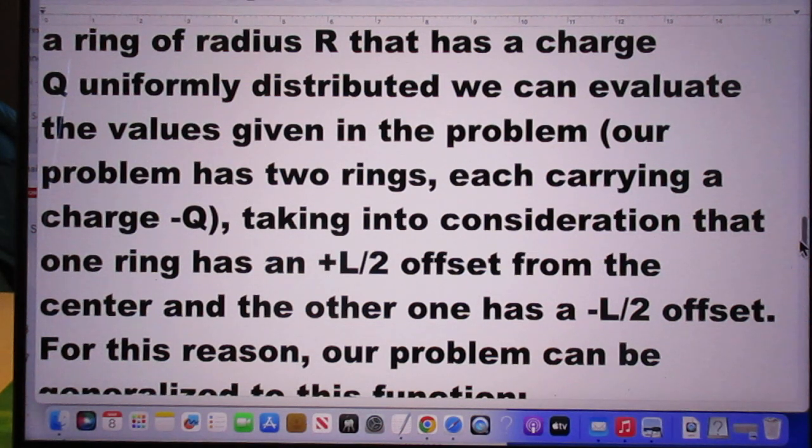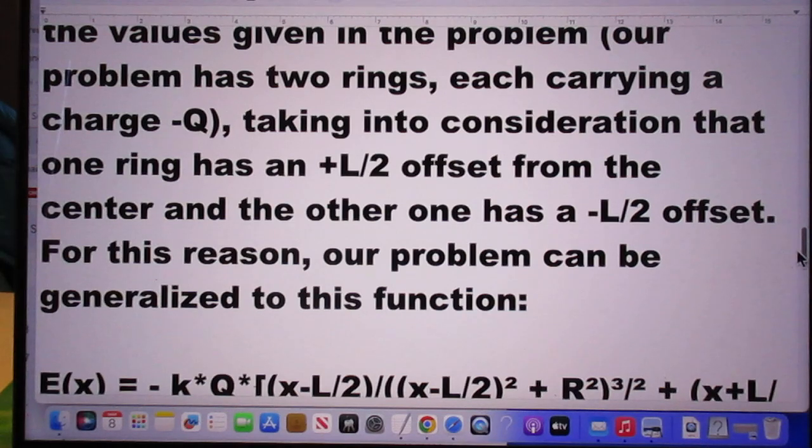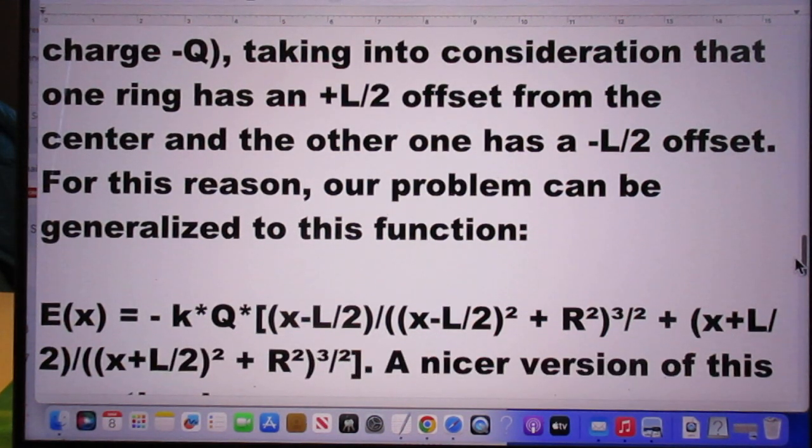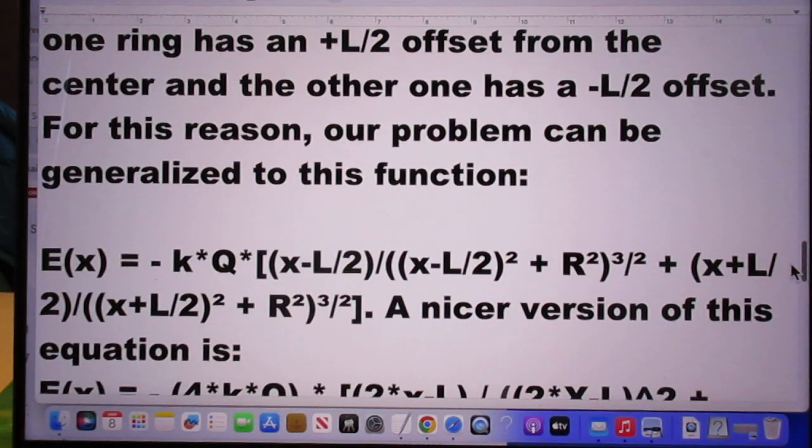Our problem has two rings, each carrying a charge minus Q, taking into consideration that one ring has a plus L over 2 offset from the center, and the other one a minus L over 2 offset. You get the following.